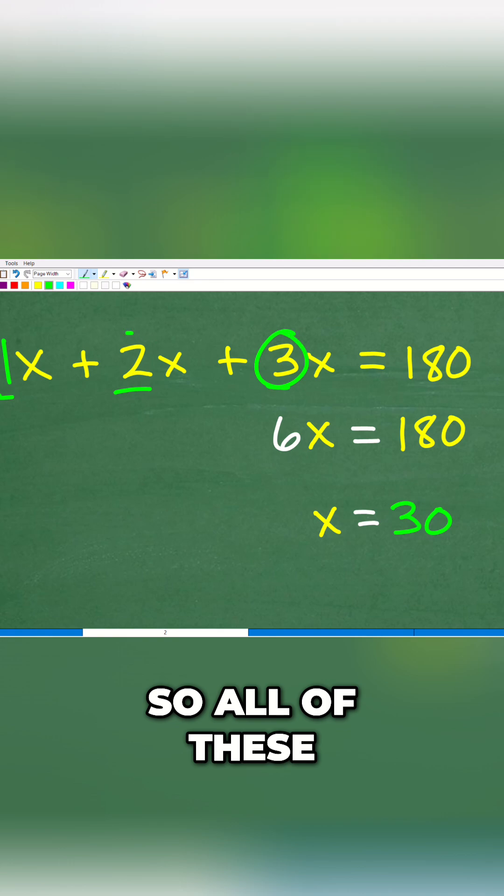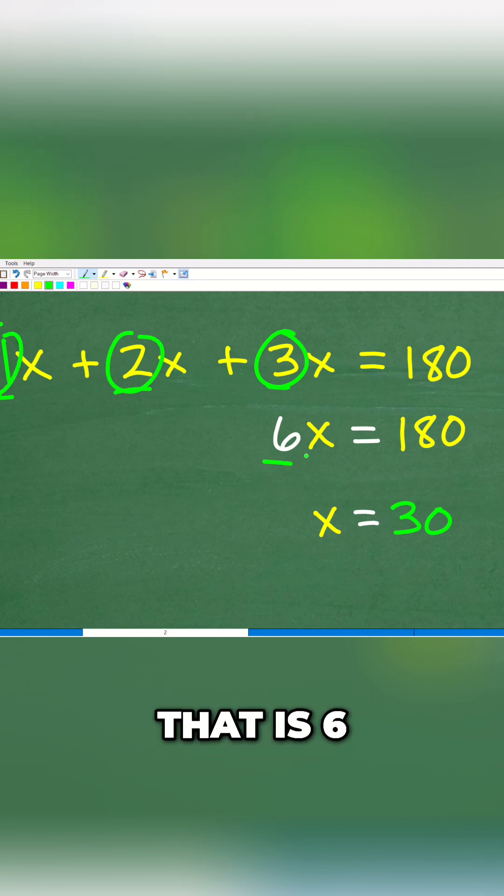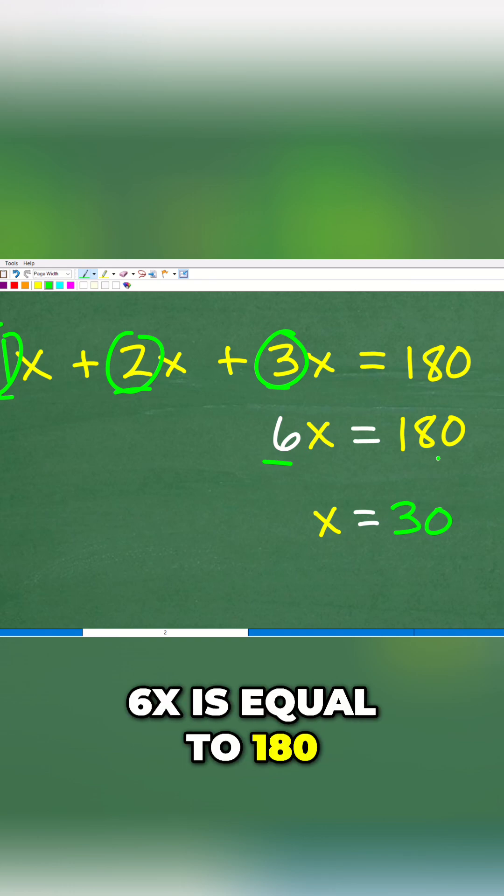All of these are like terms, so this is going to be 1 plus 2 plus 3, and the last time I checked that is 6. So that's going to be 6x is equal to 180.